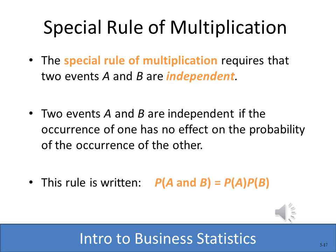We've talked about addition in probabilities; now we're talking about multiplication. The special rule of multiplication requires that the events be independent — the occurrence of one has no effect on the probability of the other. In that situation, P(A and B) = P(A) × P(B).